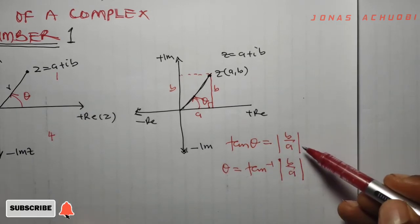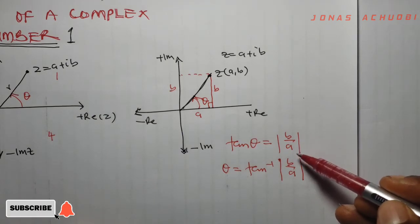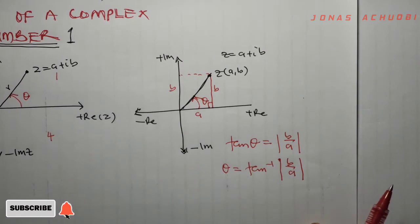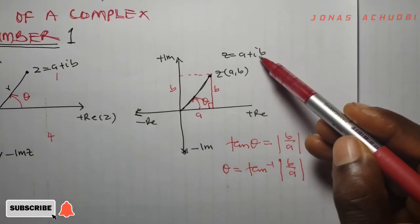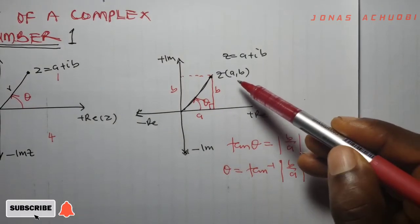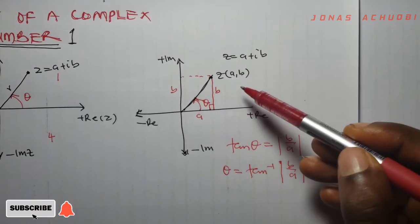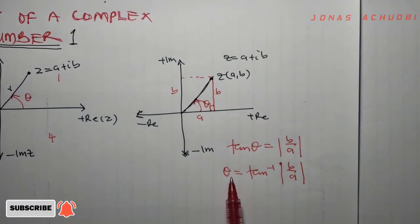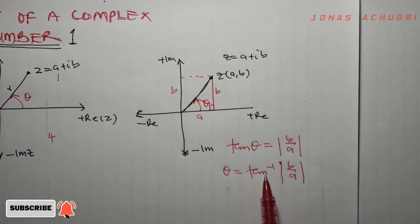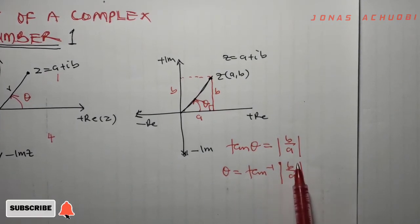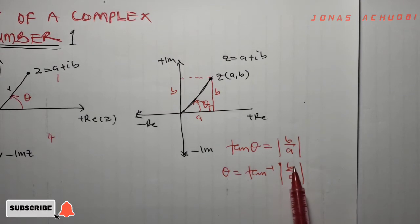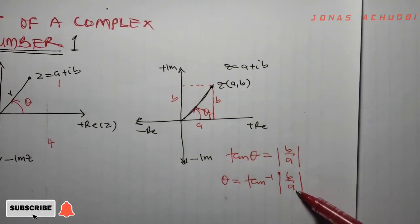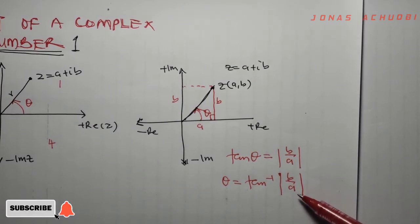We introduce the absolute value sign so that we don't have to deal with negative values. So if the complex number z equal to a plus ib is located in the first quadrant of our complex plane, then the argument of the complex number is the arc tan of the absolute value of b over a, where b is the imaginary part and a is the real part.